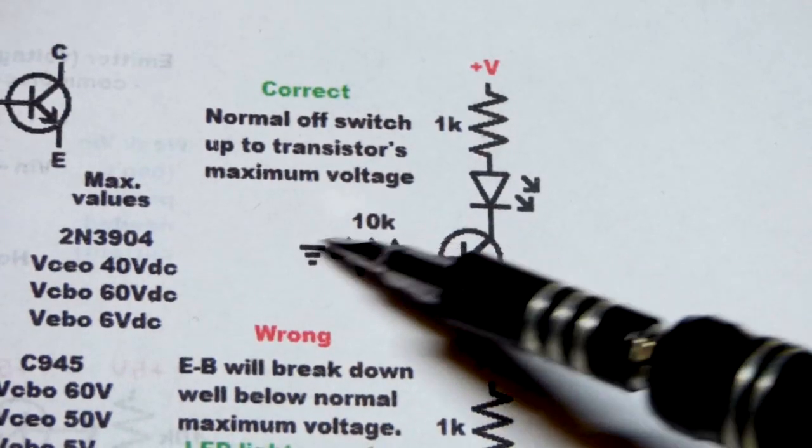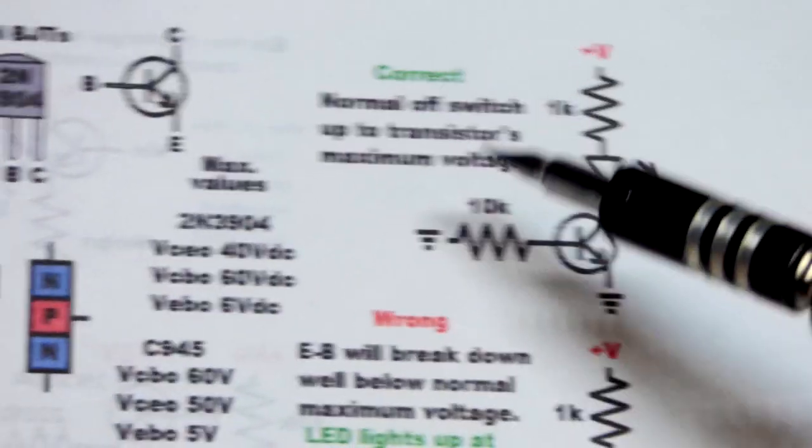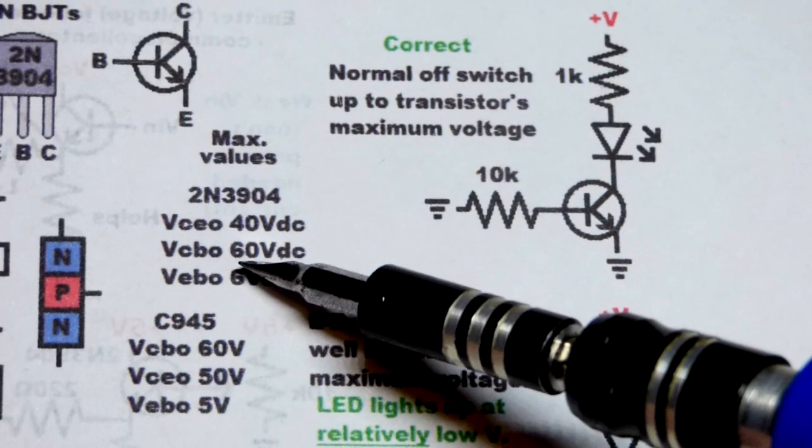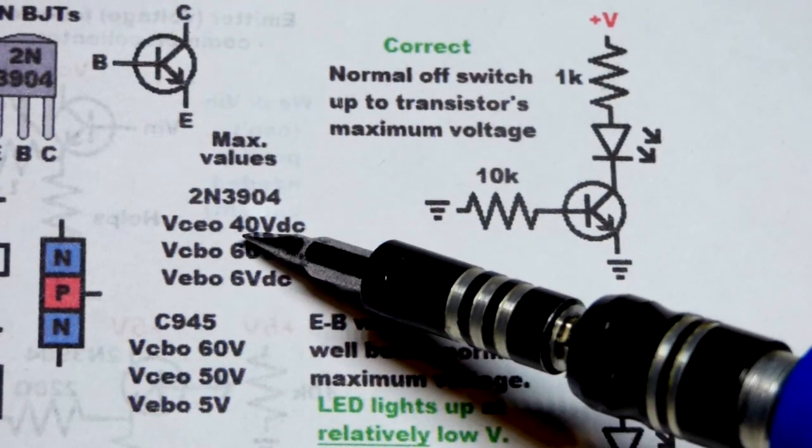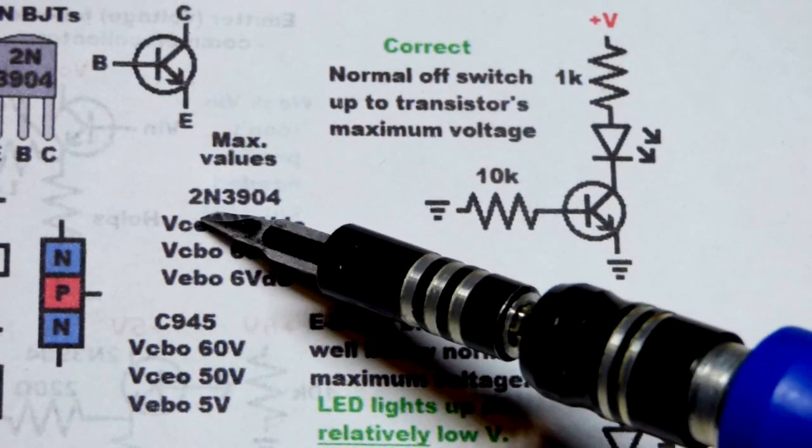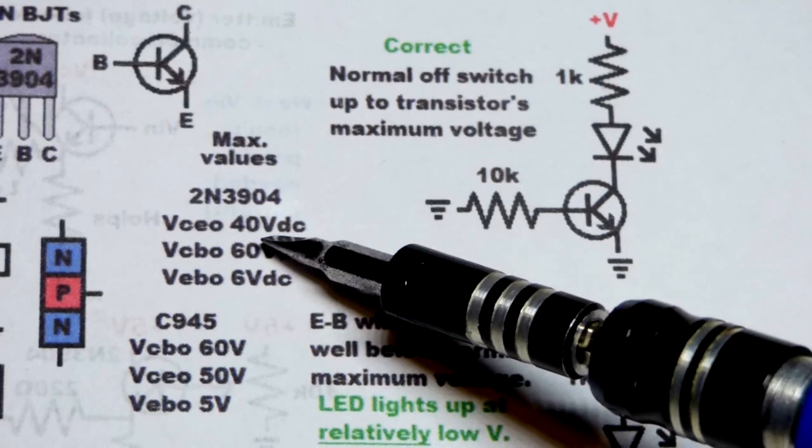We want the emitter on the ground side. So, this is an off switch, which means that if we raise the voltage to 40 volts for the 2N3904, it should stay off.